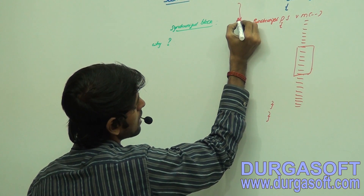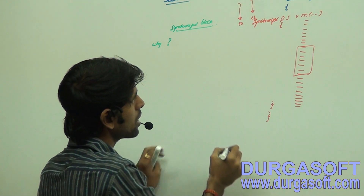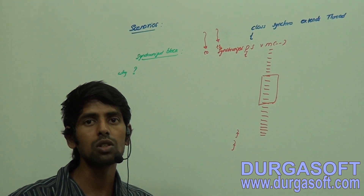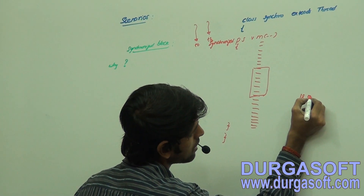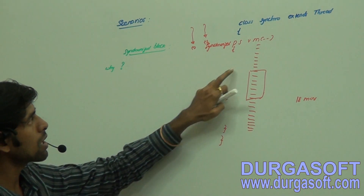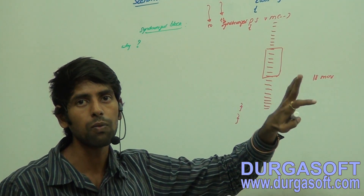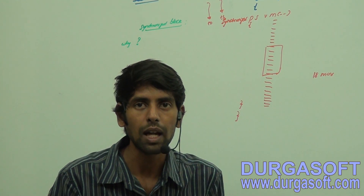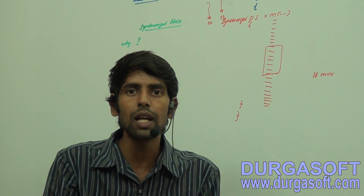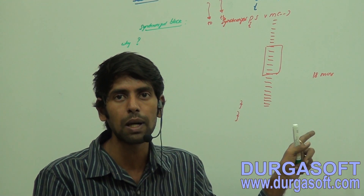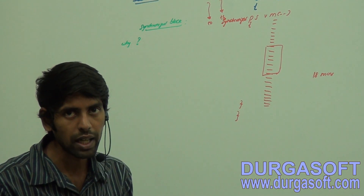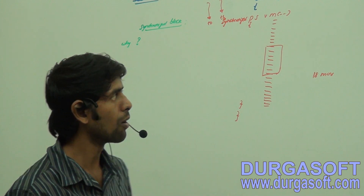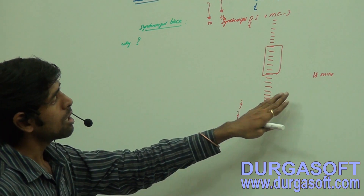Now there are two threads, t0 and t1. In order to execute this synchronized method by these two threads, it is consuming almost 18 to 20 minutes. Because the first thread must acquire the class-level lock (since it is static synchronized). After the first thread releases that lock, only then the second thread can acquire the class-level lock to execute the method. This leads to a performance degradation — execution time is increasing a lot.